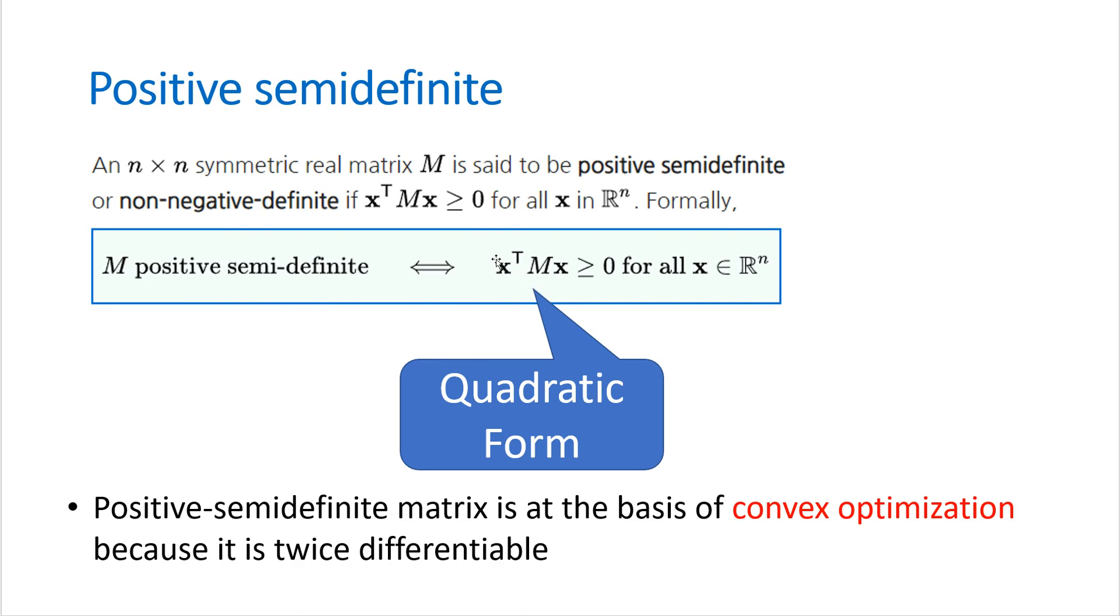Positive semidefinite matrix is at the basis of convex optimization because it is twice differentiable.